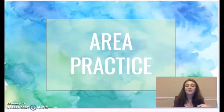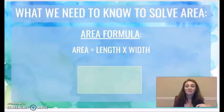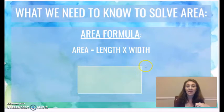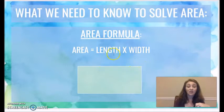So what do we need to know to solve for our area? We need to know the length and the width. As long as we know the dimensions of two of the sides, then we can find the area. We just multiply those two numbers, the length times the width.